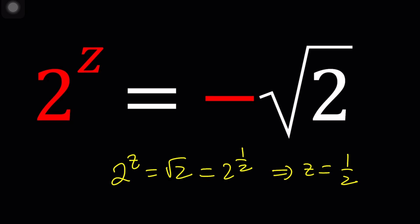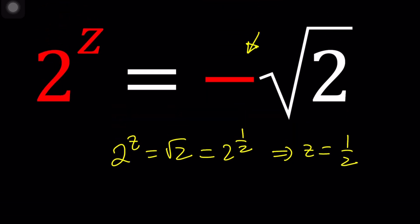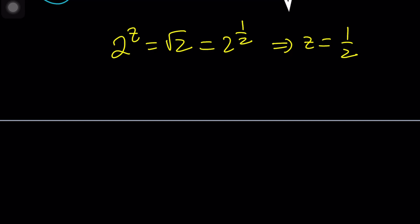Let's go ahead and take a look at how we solve these kinds of problems. We can write the 2 as e to the power ln 2, and then that will be raised to the power z, and we have negative root 2. So this is going to give us e to the power z ln 2.